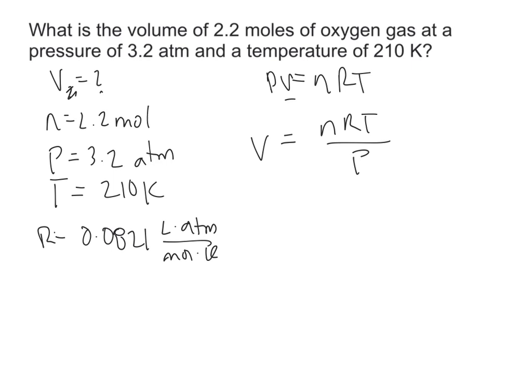Before we plug anything into this equation, we want to make sure that all of the units in the variables that have been given match our ideal gas constant. So liters, our volume is going to be in liters. Moles and moles match up, atm and atm match up, kelvin and kelvin match up. If any of these values do not match up, you must convert them to match what's in the constant. Once you establish that, you can go ahead and plug in your numbers.